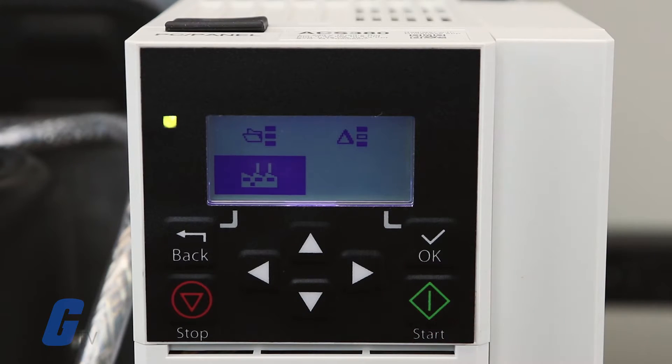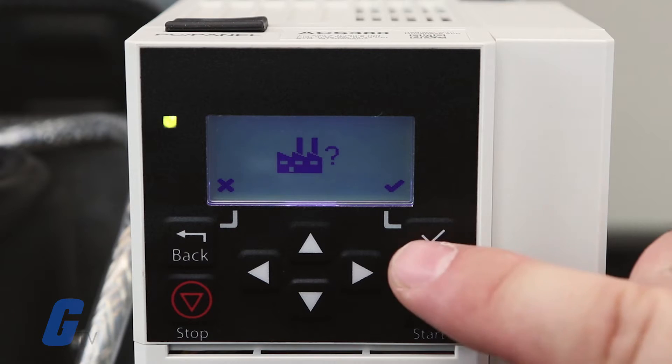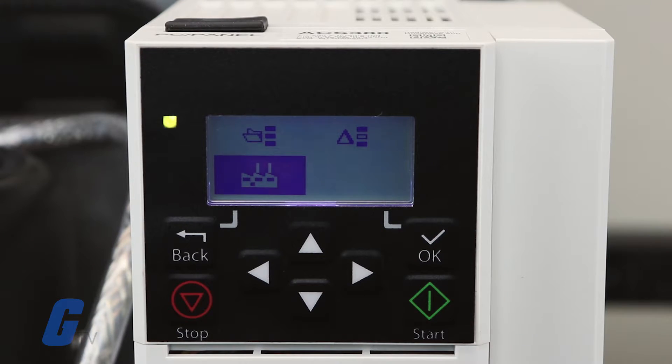This option looks like a factory and is the parameter restore option. Pressing OK will reset the values to the default values of the macro selected. To perform a full factory reset, go to the parameters menu.